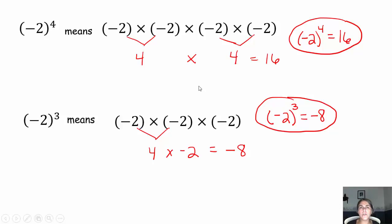I'd like you to think about why that happens — why sometimes we get positive answers even when our base starts as a negative, and sometimes we get negative answers when our base starts as a negative.